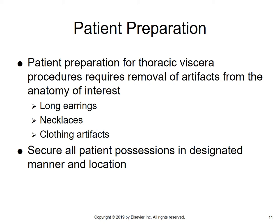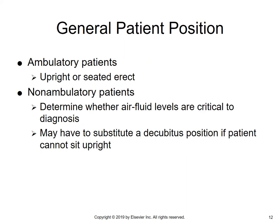Generally, if you're having the patient take their necklaces or earrings off, keep them in the room in sight of the patient. You don't want to bring anything behind the control panel and be accused that something was taken. For ambulatory patients, upright or seated erect is preferred. Determine whether air-fluid levels are critical to diagnosis; you may have to substitute a decubitus position if the patient cannot sit upright — this decision is made by the radiologist. Upright chest radiography is best because it helps fluid to descend, and you can see air-fluid levels within the thoracic cavity.